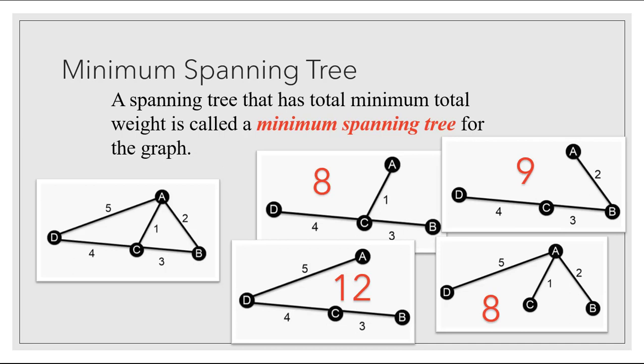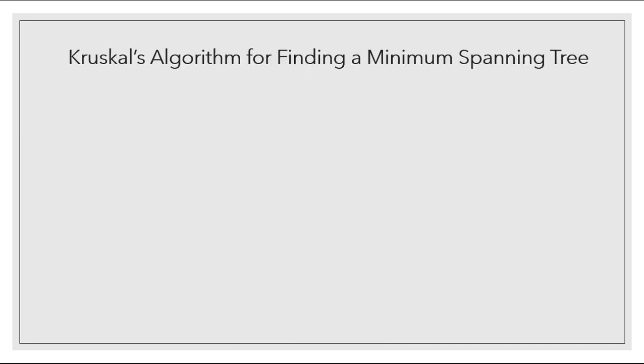Now if we were to just look at these four spanning trees, it would appear that the minimum spanning tree would have a weight of eight. But how can we know for sure? Well, there's a procedure called Kruskal's algorithm, which gives us the exact steps we need to find a minimum spanning tree.